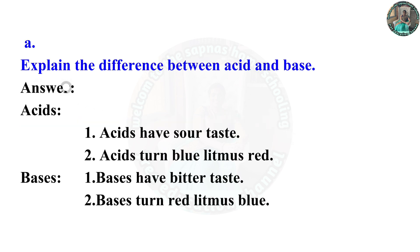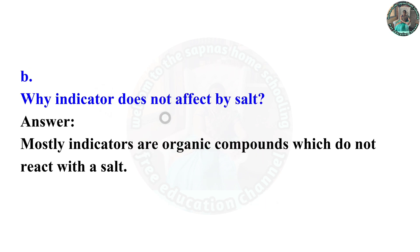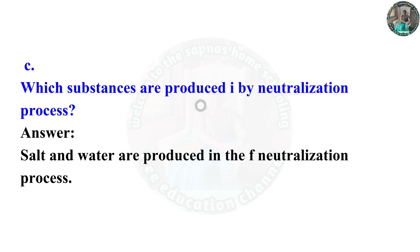Question 5A: Explain the difference between acid and base. Acids have a salty taste and turn blue litmus red. Bases have a bitter taste and turn red litmus blue. Why does an indicator not get affected by salt? Mostly indicators are organic compounds which do not react with salt. Which substances are produced in the neutralization process? Salt and water are produced in the neutralization process.